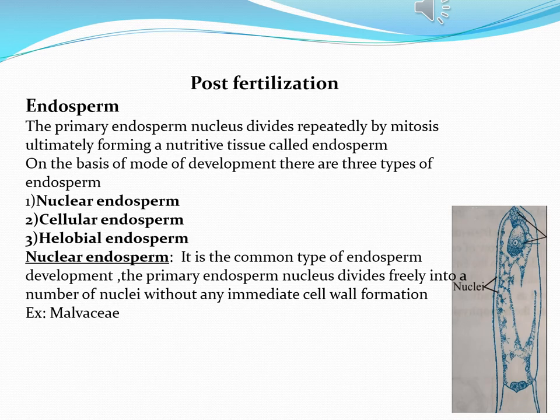As we know, the polar nuclei have a 2n number. They fuse with one of the male gametes to form a structure called the primary endosperm nucleus (PEN). This primary endosperm nucleus then divides repeatedly by mitotic divisions to form a nutritive tissue that we call the endosperm.